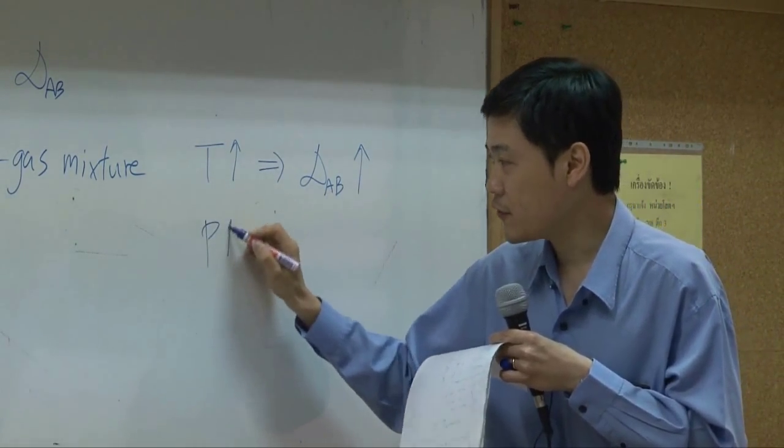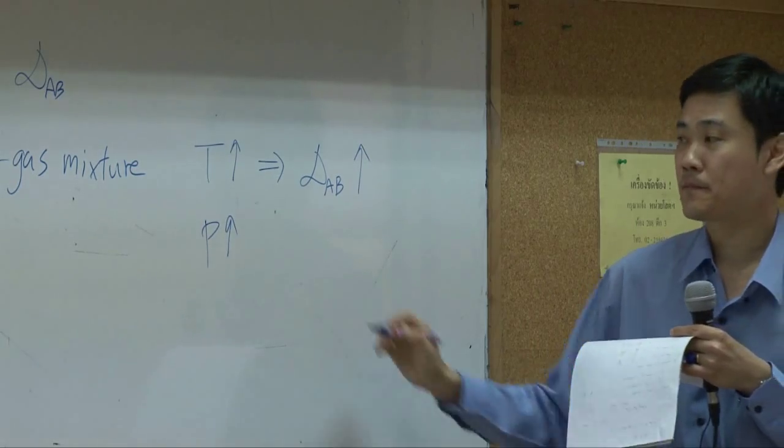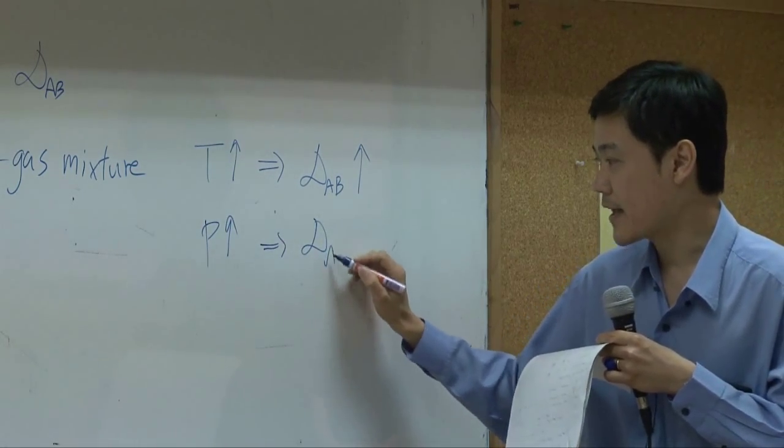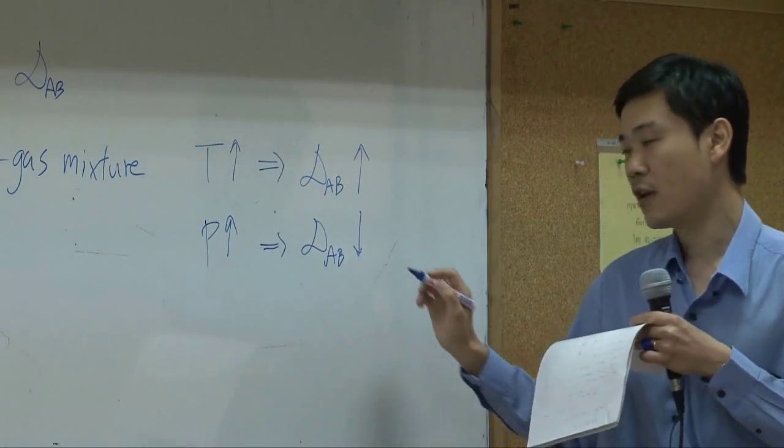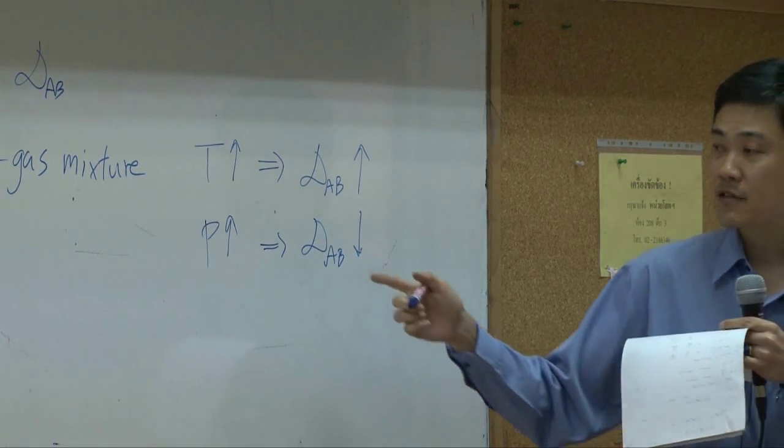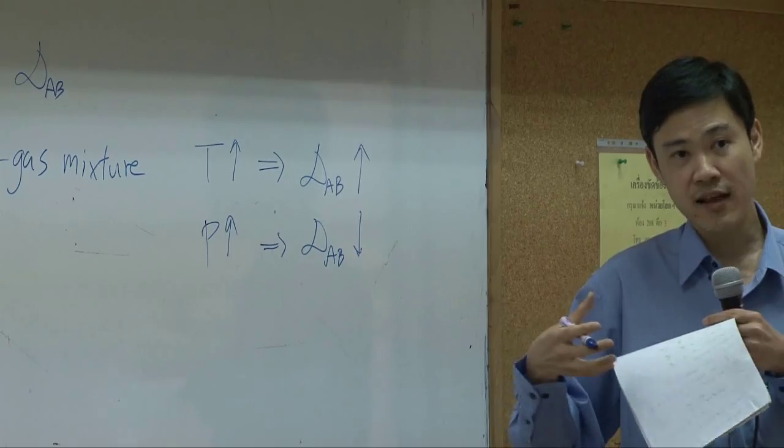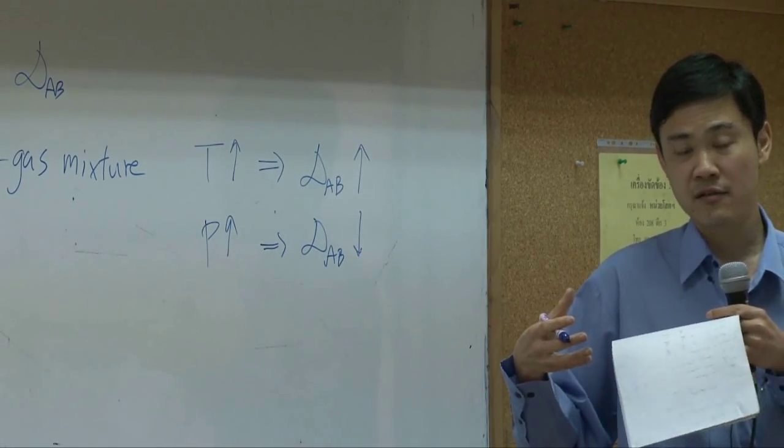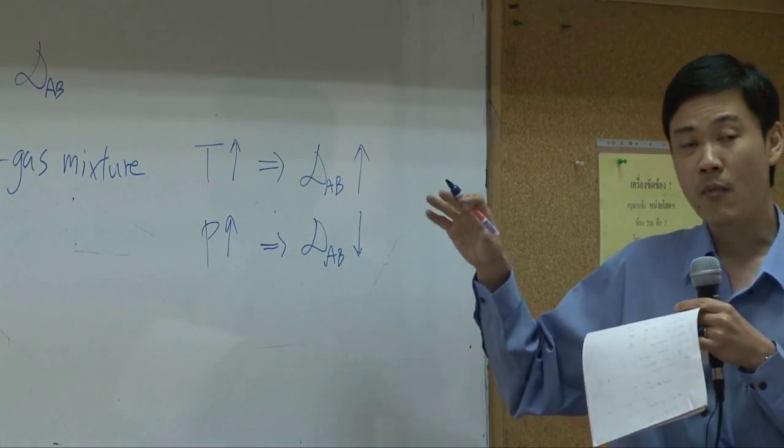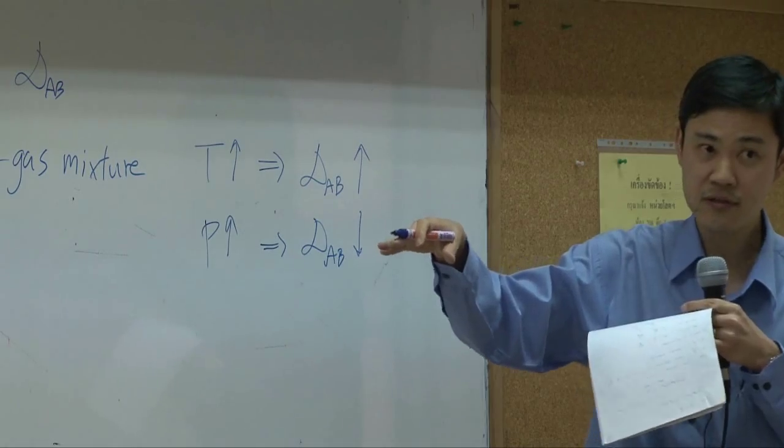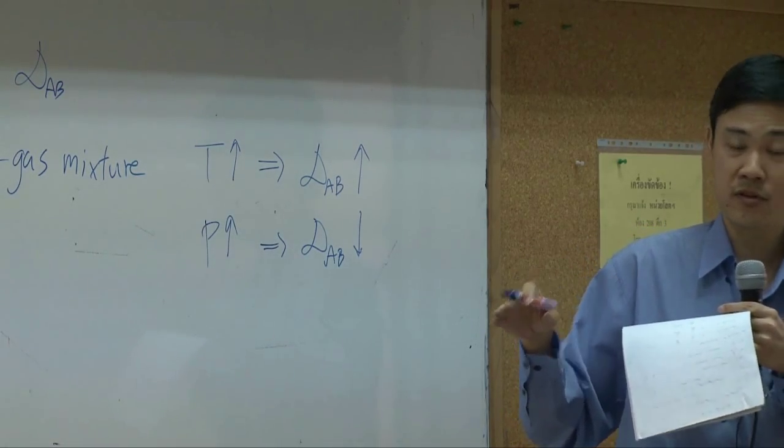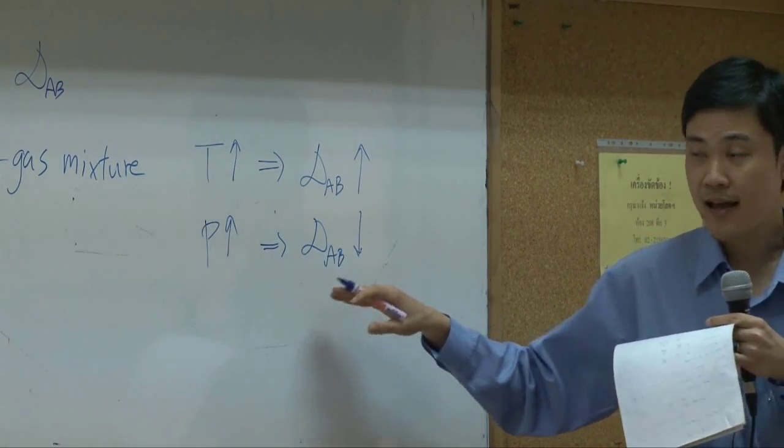On the other hand, if you increase pressure, diffusivity for gas goes lower. Because when you increase pressure, molecules of gas condense together, come closer together. So in order for one another molecule to pass through it, it will be more difficult. So diffusivity would get lower as pressure is higher.